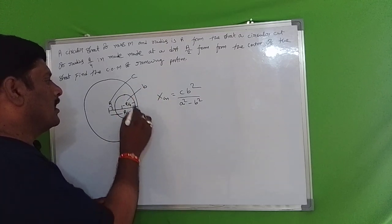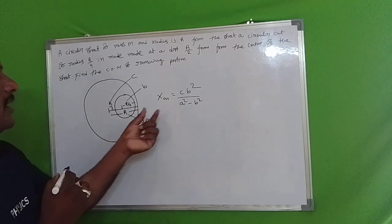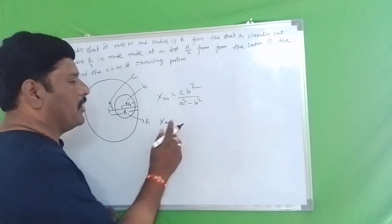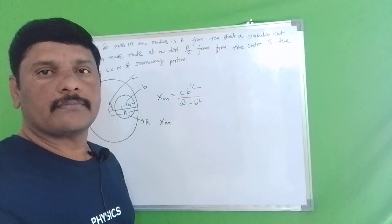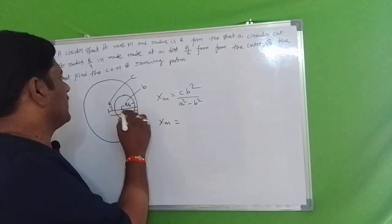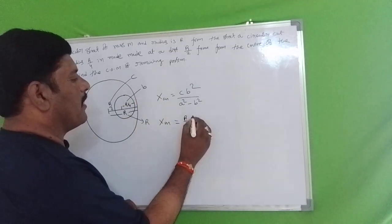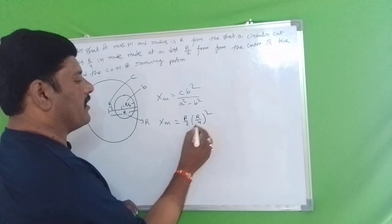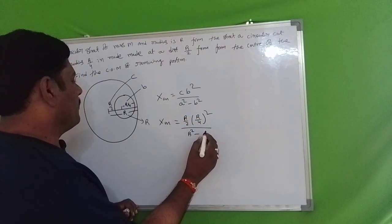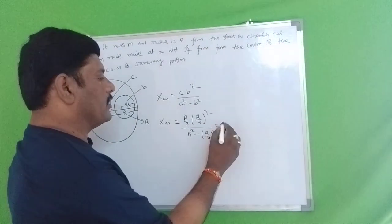We substitute the values. Finally we get the answer. XCM equals the substitution: C is nothing but R/2, B is nothing but R/4, and A is nothing but R. So we set up R/2 times (R/4)² divided by R².